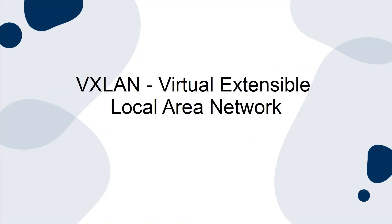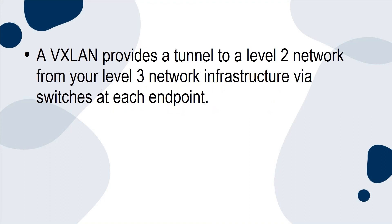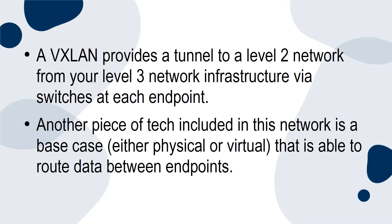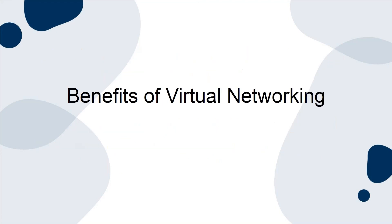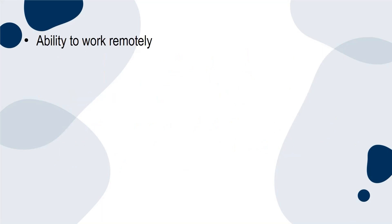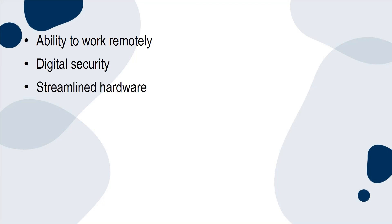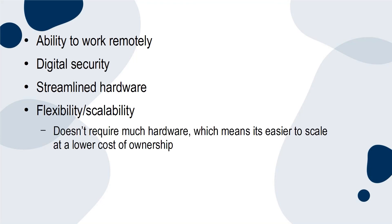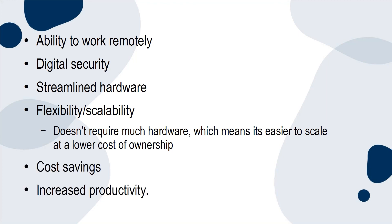A VXLAN, or Virtual Extensible Local Area Network, provides a tunnel to a Level 2 network from your Level 3 network infrastructure via switches at each endpoint. Another piece of tech included in this network is a base case — either physical or virtual — that is able to route data between endpoints. Virtual networking for business has a variety of benefits, including: the ability to work remotely, digital security, streamlined hardware, flexibility and scalability, lower cost of ownership since it doesn't require much hardware, cost savings, and increased productivity.